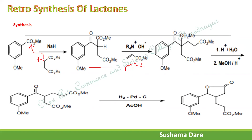Decarboxylation removes the activating group that was added. Then heating is applied, and the COOH is converted back to a COOCH₃ ester by reaction with methanol in the presence of H⁺. Finally, reduction with H₂/Pd–C in acetic acid reduces the carbonyl group. After reduction, cyclization takes place in acidic media, giving lactone 3, the target molecule.